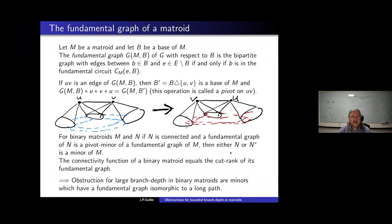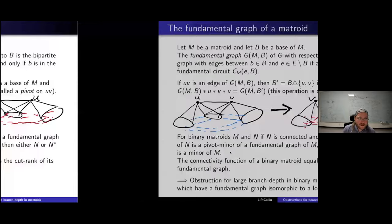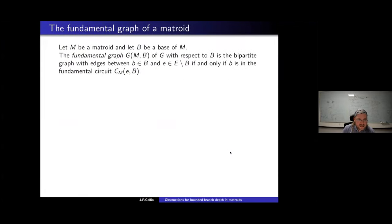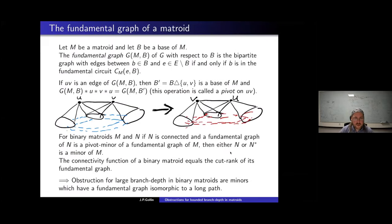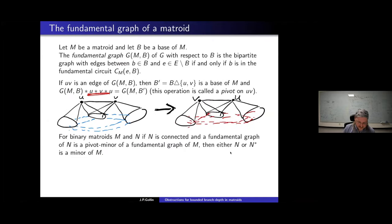Since in binary matroids the connectivity function equals the cut rank function of the fundamental graph, we can apply the theorem about vertex minors in this context to get that the obstructions for large branch depth in binary matroids are precisely those matroids whose fundamental graph is isomorphic to a long path.